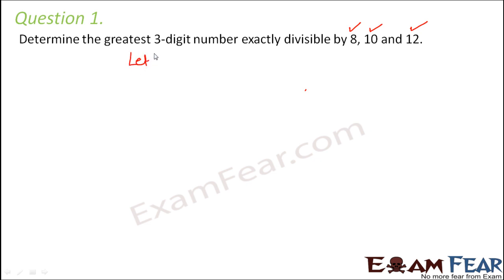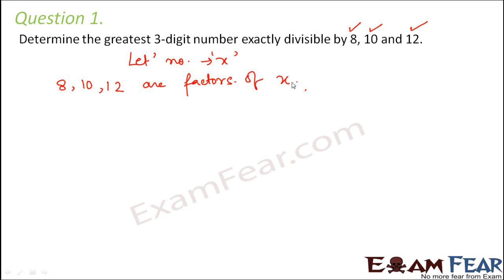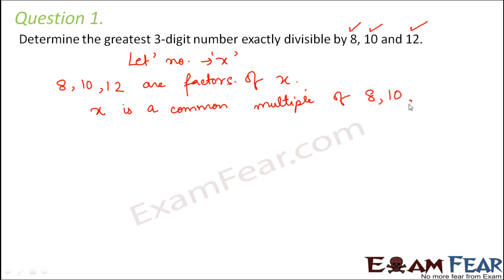So let us say that number is x. As per the question, 8, 10 and 12 are common divisors of x, or we can say these are factors of x. So basically x is a common multiple, because x is a multiple of 8, x is also a multiple of 10, and x is also a multiple of 12. So basically x is a common multiple of 8, 10 and 12.